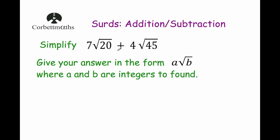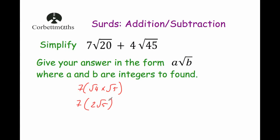Our next question says: simplify 7 Root 20 plus 4 Root 45, giving the answer in the form A Root B. This question is a little different because we have numbers in front of the surds — 7 Root 20 and 4 Root 45. Let's start with 7 Root 20. The biggest square number that goes into 20 is 4, so Root 20 equals Root 4 times Root 5, which simplifies to 2 Root 5. We've got 7 lots of it, so 7 times 2 is 14, giving us 14 Root 5. So 7 Root 20 equals 14 Root 5.